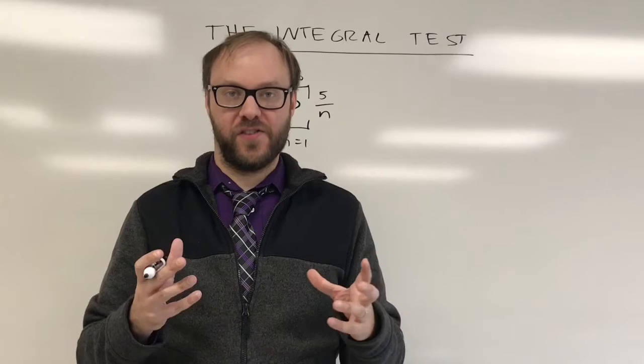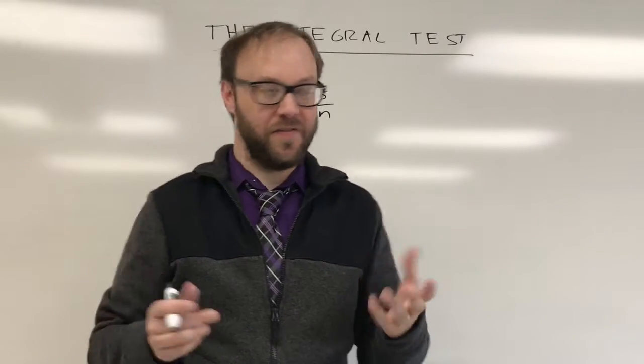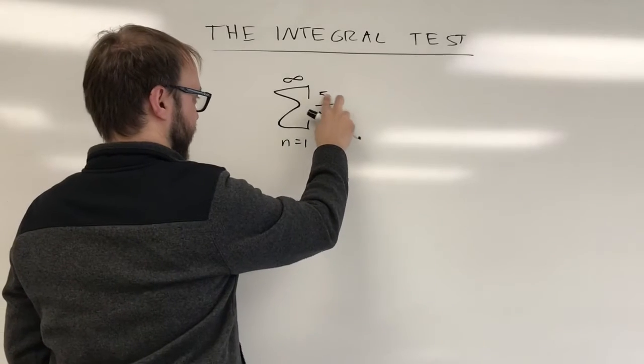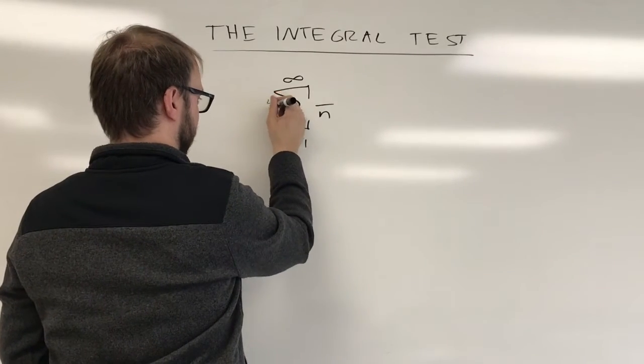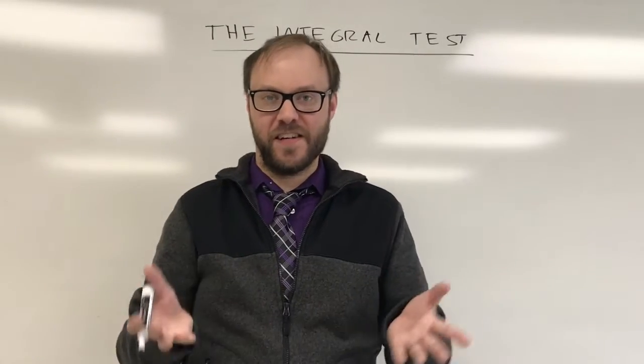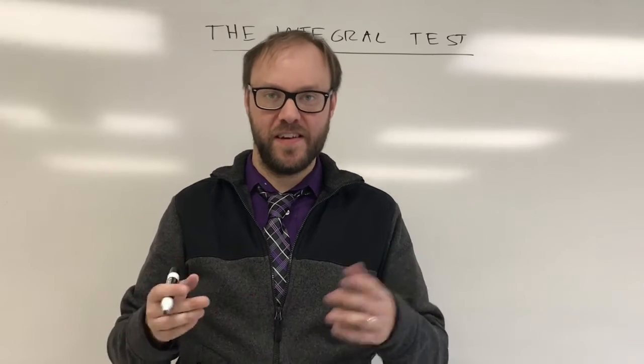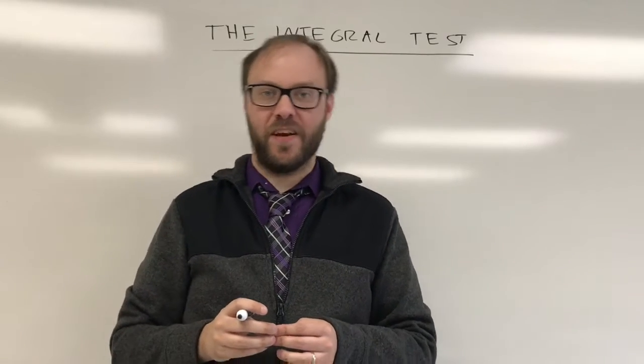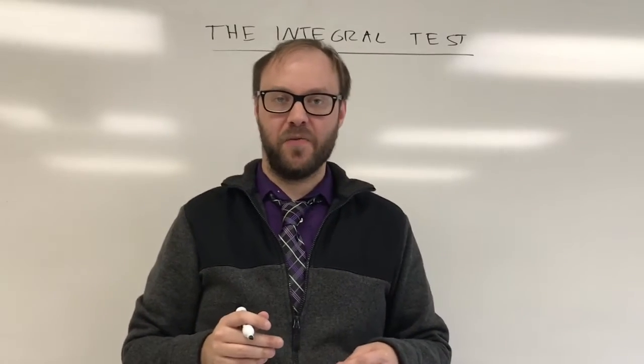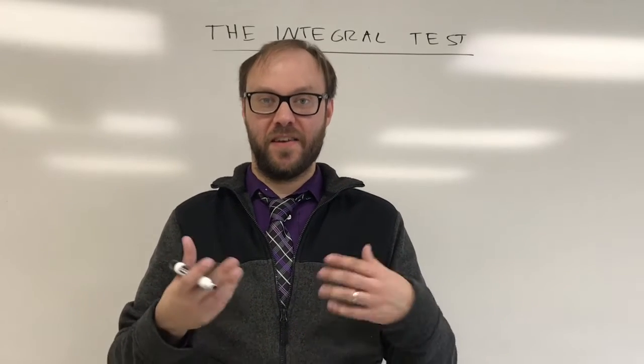Remember that with summations, just like with integrals, and in fact the integral rules come from summations, you can factor a constant out. So I would suggest factoring out this 5. If we have a series that's divergent and we multiply it by 5, it's still going to be divergent. If we have a series that's convergent and we multiply it by 5, it's still going to converge. So that's a rule that you definitely can use and it's definitely very important to be able to simplify things down to things that you recognize.